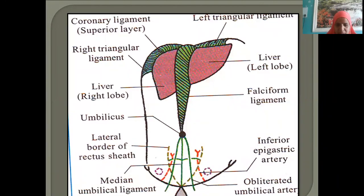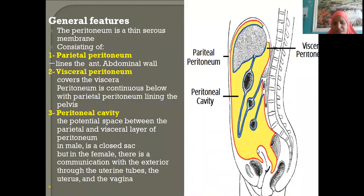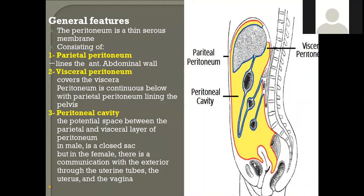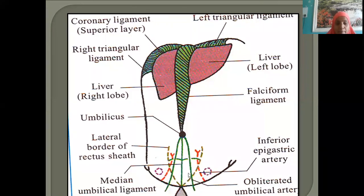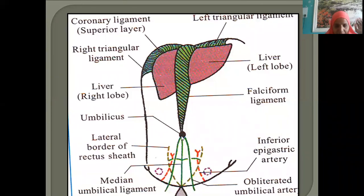From the pubic symphysis, immediately behind it we have the urinary bladder. From the pubic symphysis to the umbilicus there is a thickening of the peritoneum called the median umbilical ligament. Immediately lateral to this is the medial umbilical ligament, and more laterally there is the lateral umbilical ligament.